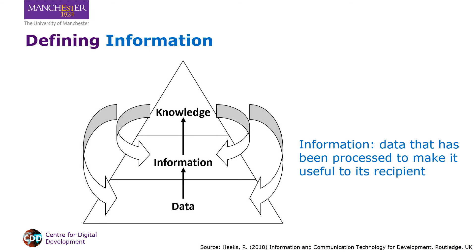The best way to understand information is through three related concepts. Data is raw, unprocessed information. Information is data that has been processed to make it useful to its recipients. And knowledge is information that's been assimilated into a coherent framework of understanding, usually understood as being the human mind.